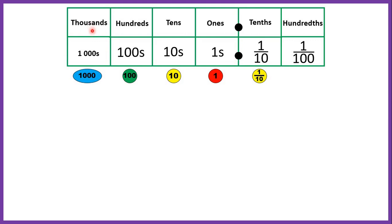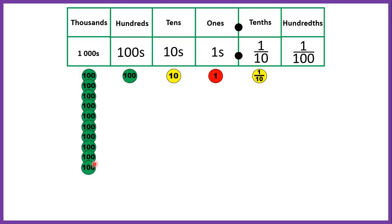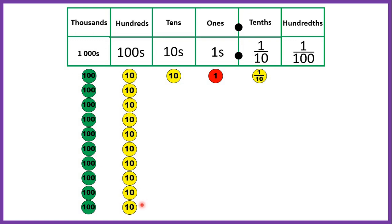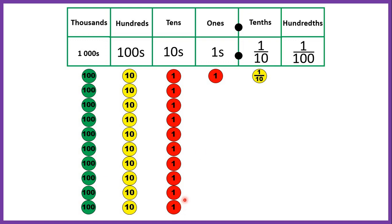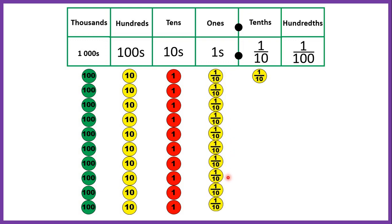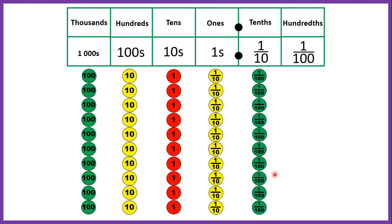We know our place values for thousands, hundreds, tens, and ones. Then we have a decimal point to separate our ones from our tenths, and now we know that the place value after the tenths is the hundredths place. One ten is the same as ten ones, and this carries on into decimal place values as well — so if we have one one that's the same as having ten tenths, and if we have one tenth that's the same as having ten hundredths.